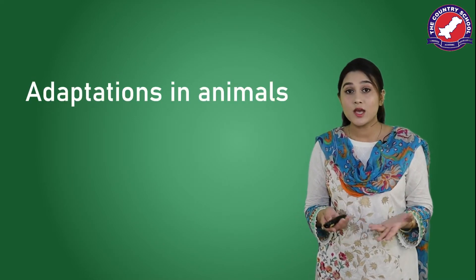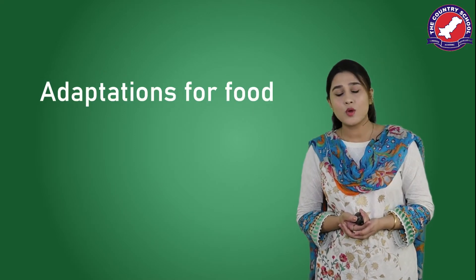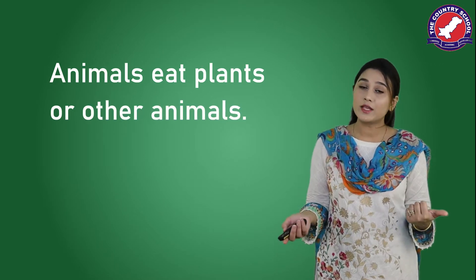Previously we learnt how animals have adapted to their habitat — how animals change themselves according to where they live. Today we are going to study how animals adapt themselves according to the food they eat. So we are learning adaptation of animals for food. They eat plants or other animals, and they adapt their teeth and most parts of their bodies accordingly.